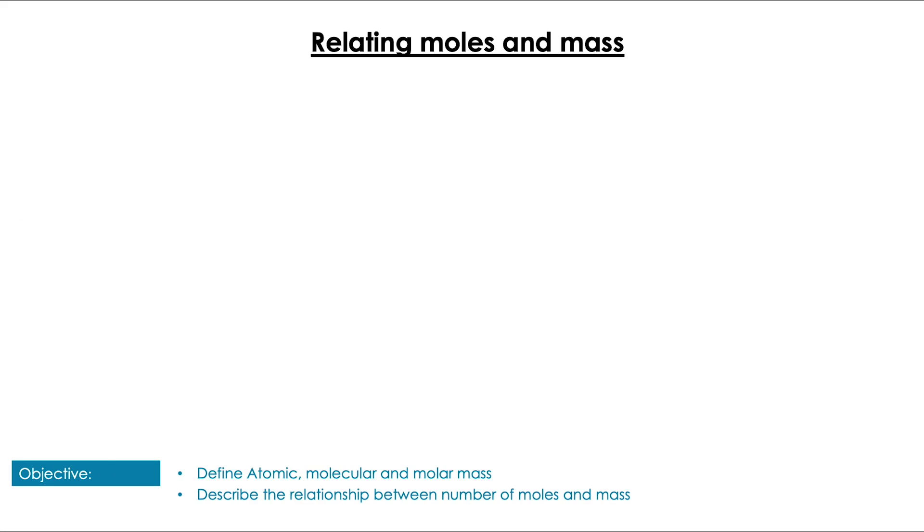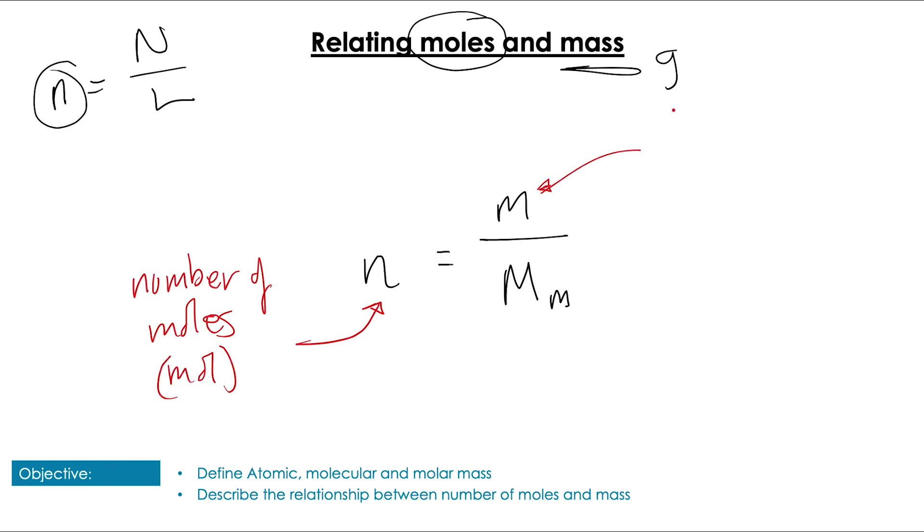Last lesson, we looked at the relationship between the number of particles and Avogadro's number. That was number of moles equals number of particles over Avogadro's number. Now we're going to look at the relationship between moles and mass. So the number of moles is equal to mass over molar mass. So n, just as it did in the previous lesson, is the number of moles, and that has the unit of moles. M, small m, is mass, and that is in grams. Make sure you recognize that it's in grams. And molar mass is in grams per mole.